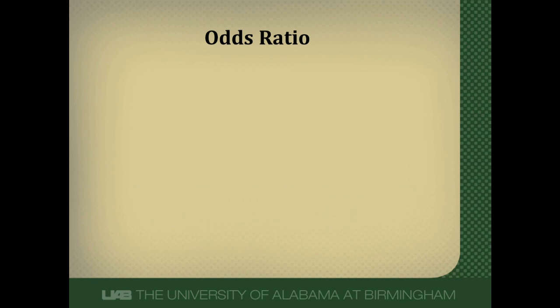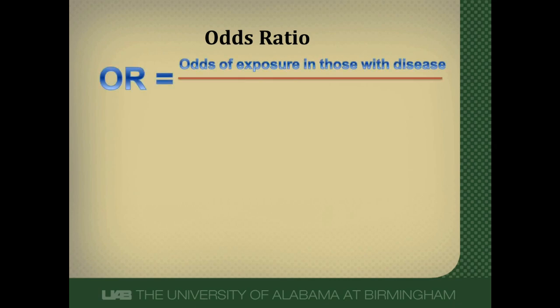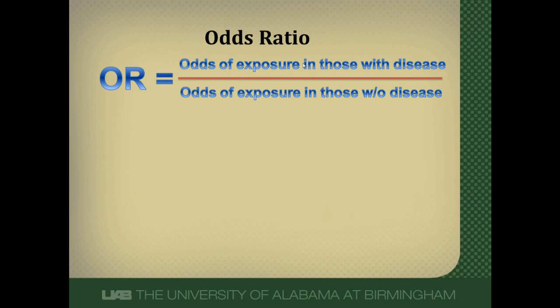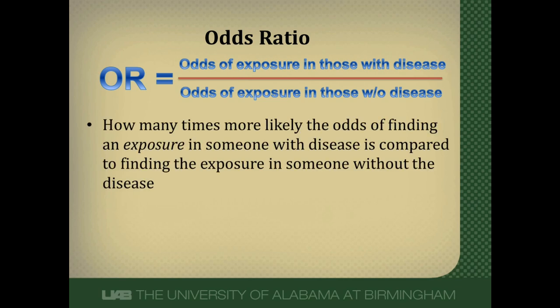What about an odds ratio? Physicians often interpret it the same as a relative risk, though technically it's quite different. An odds ratio is a ratio of the odds of exposure in those with disease — the cases — divided by the odds of exposure in those without disease — the controls. In a case control study, we start with cases and controls, then go backwards in time for exposure. So an odds ratio actually estimates the risk of exposure, not disease risk. It reflects how many times more likely the odds of finding an exposure are in someone with disease compared to someone without.